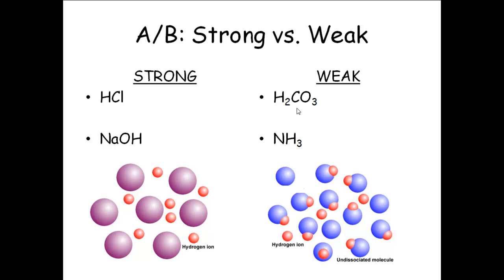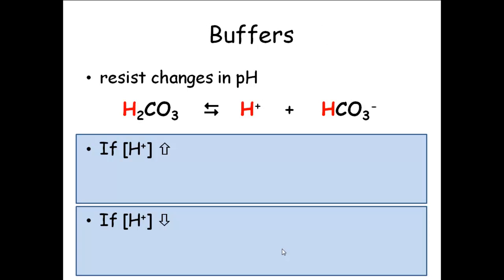So our blood is actually a little bit basic — so we can neutralize the acids that are constantly being made. Hydrochloric acid and sodium hydroxide are examples of a strong acid and strong base. Carbonic acid is a weak acid, and ammonia is a weak base. Ammonia hangs out fine, but if there are extra hydrogen ions in the water, it'll suck them up and form the ammonium ion — functioning as a base by removing hydrogen ions from solution. The fewer hydrogen ions you have, the higher the pH goes. What we have inside of our body to help deal with this are called buffers — a buffer is anything that resists a change in pH.